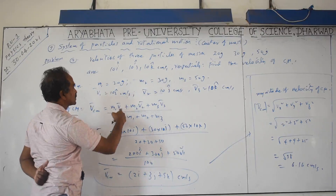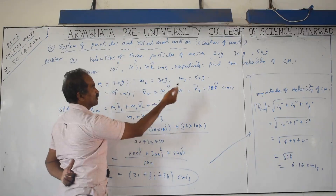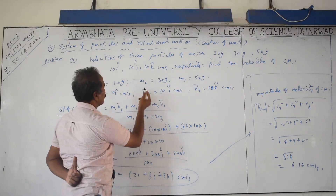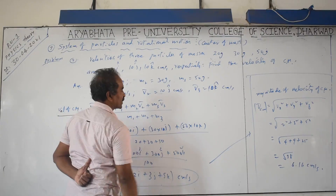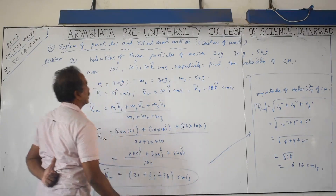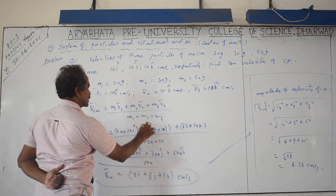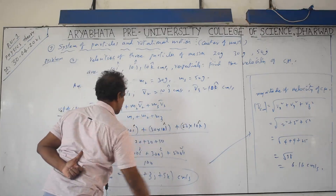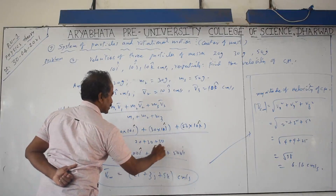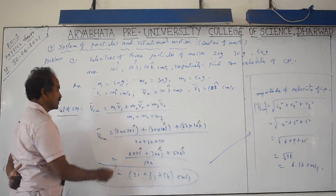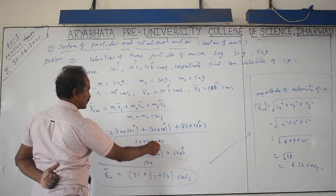Substituting values: m1 = 20g with v1 = 10i, m2 = 30g with v2 = 10j cm/s, and m3 = 50g with v3 = 10k. The i, j, k are understood as unit vectors. This gives (20×10i + 30×10j + 50×10k) / (20 + 30 + 50) = (200i + 300j + 500k) / 100.